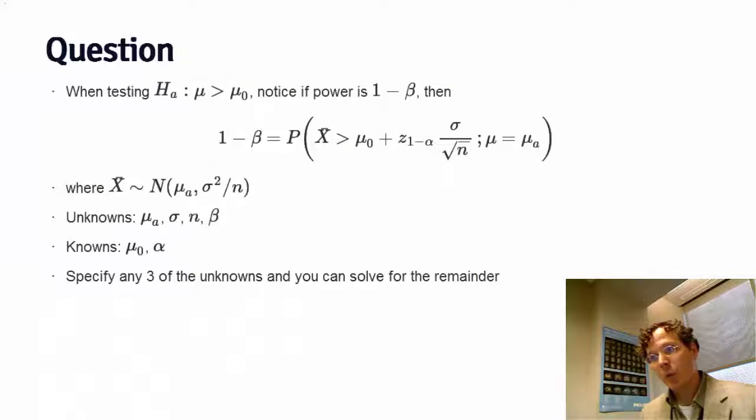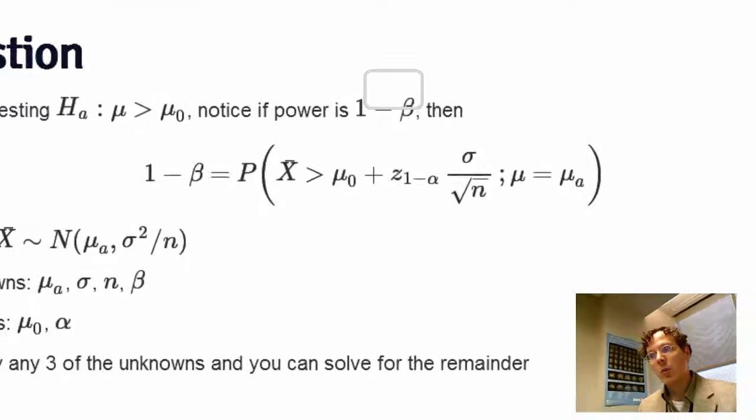So let's just reiterate, when we're testing our alternative, being that mu is greater than mu naught, and then I'm going to specify power in terms of 1 minus beta, where beta is the type 2 error rate, then we get this equation.